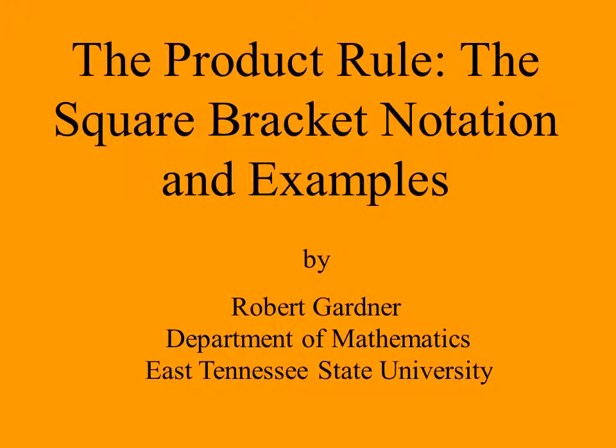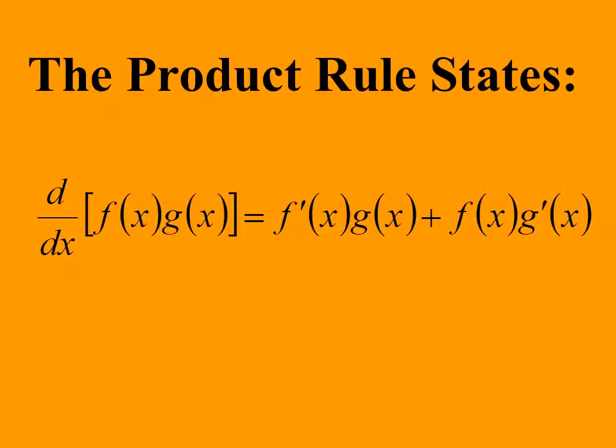The Product Rule: the square bracket notation and examples. The Product Rule states that the derivative of f(x) times g(x) equals f′(x) times g(x) plus f(x) times g′(x).